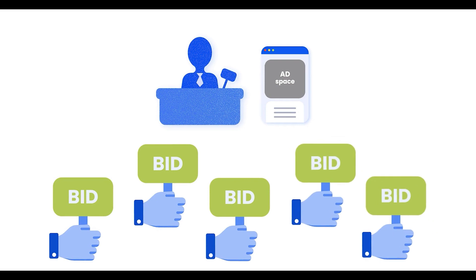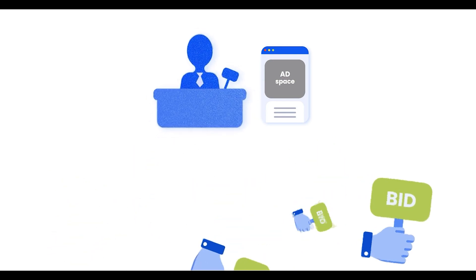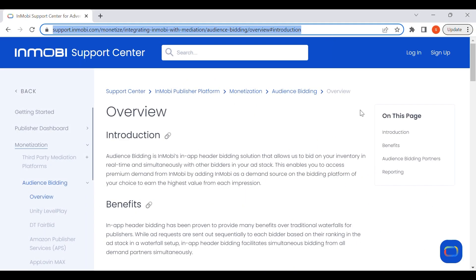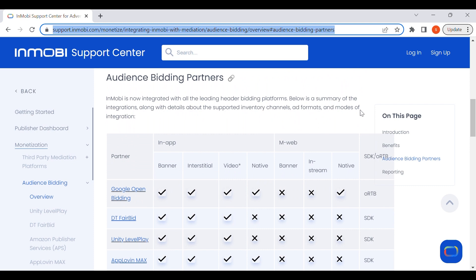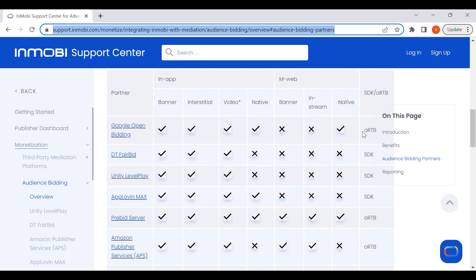Audience bidding allows us to bid on your inventory in real time and simultaneously with other bidders in your ad stack. InMobi is the only mobile SSP to be integrated with all the leading header bidding platforms.